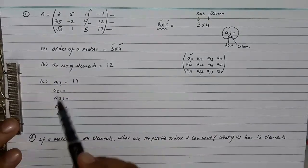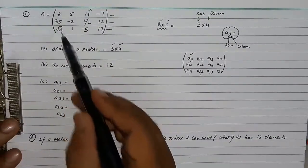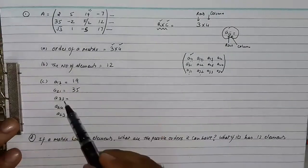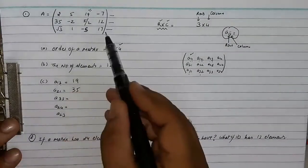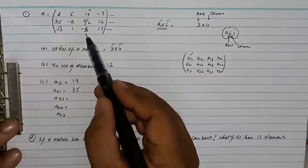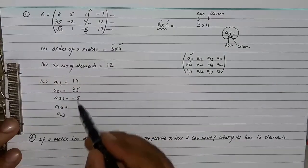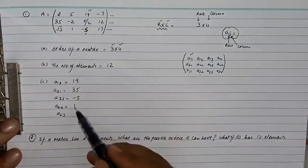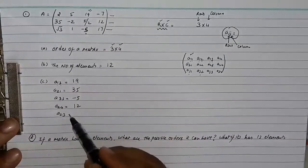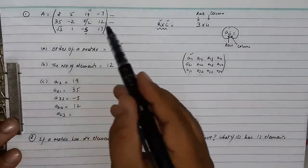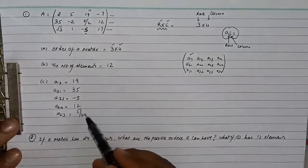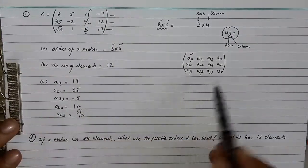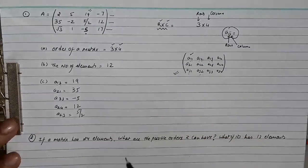Similarly, the element at a21 means second row and first column, which is 35. They also want a33 — third row, third column — which is minus 5. Then a24 means second row, fourth column, which is 12. And a23 means second row, third column, which is 5 by 2. So we can find the positions in this way.